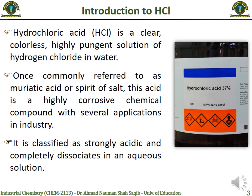HCL is a solution of hydrogen chloride gas in water. It is also known as muriatic acid or spirit of salt — these are the historical names of hydrochloric acid. Another very important property of HCL is that it is a highly corrosive chemical. Although it has many applications in industry, its corrosive nature means that specific materials are required for its use. Based on its acidity, it is known as a strong acid, as it completely dissociates in aqueous solution.